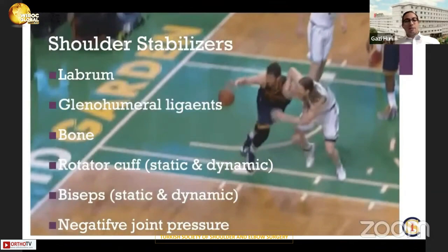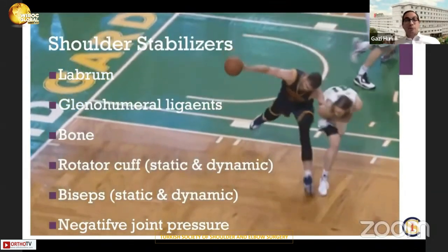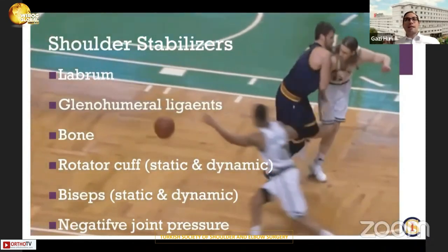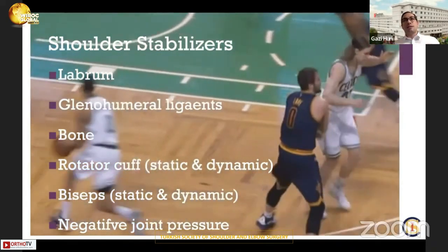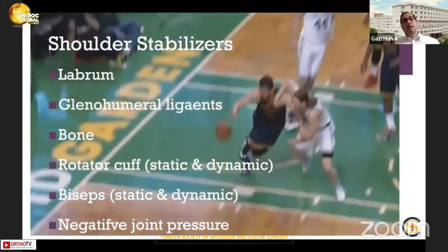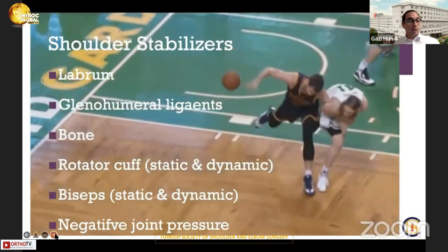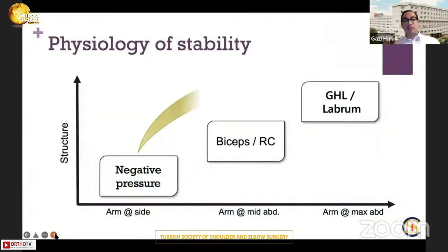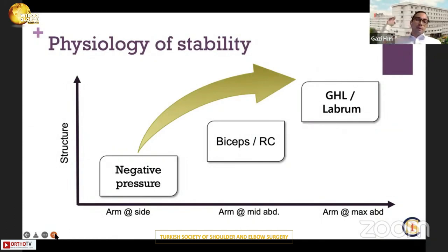The labrum, glenohumeral ligaments, rotator cuff, and biceps tendons are the main soft tissue balancers of the shoulder. On the other hand, there is just a small bone that statically stabilizes the joint. We often forget about the negative joint pressure of the shoulder, which is very important, especially with the arm at side. When we start to abduct the arm, stabilization is provided by the biceps tendons and rotator cuff. Especially in the throwing position — arm at maximal abduction and external rotation — the viscous soft tissue structures, the glenohumeral ligaments, particularly the anterior bundle of the inferior glenohumeral ligament and the labrum, have the greatest effect on stability.